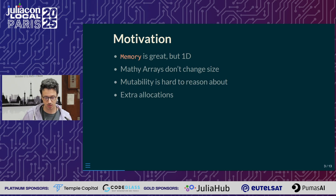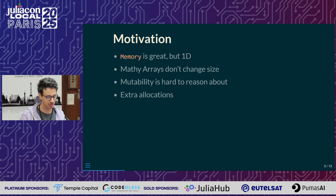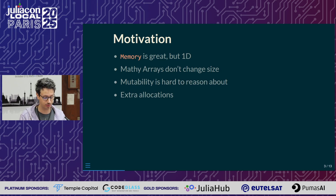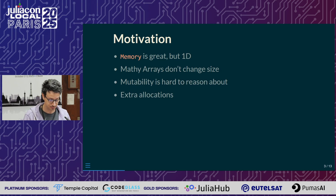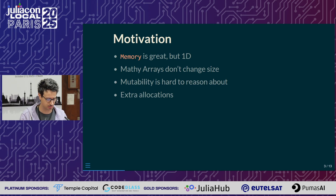The mutability — being able to change the size — creates many problems for the compiler because it prevents lots of optimization opportunities, and also creates some extra allocations.